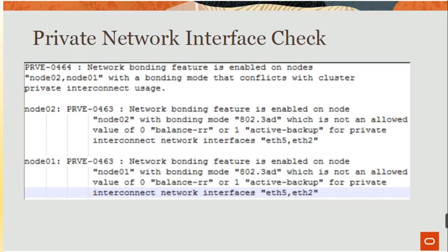Private network interface check — PRVE-0464: network bonding feature is enabled on nodes. Node 1 and Node 2 with a bonding mode that conflicts with the cluster private integral QCH. PRVE-0463: network bonding feature is enabled on Node 2 with bonding mode H02-380, which is not an allowed value of zero balance or R1. Active backup or private integral network interface ETH5 or EDS2. Similarly for Node 01: bonding mode H02-380 is not an allowed value — private integral network interface ETH5 or NETWORK 2.